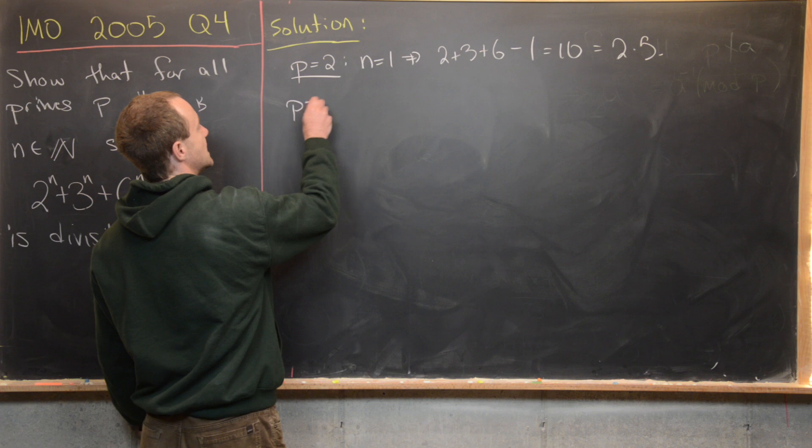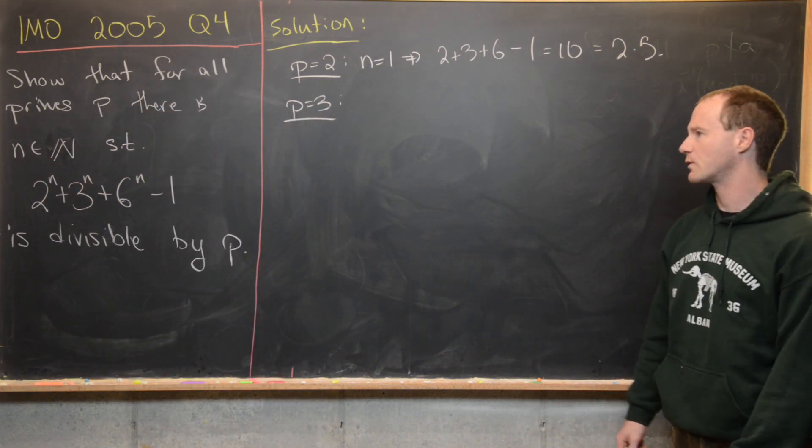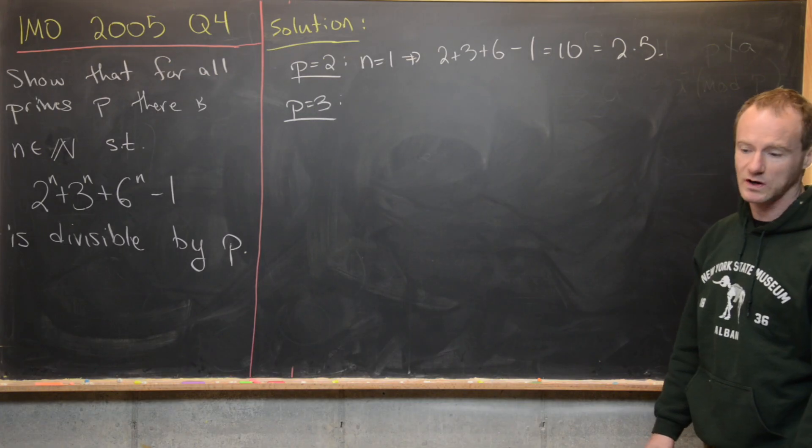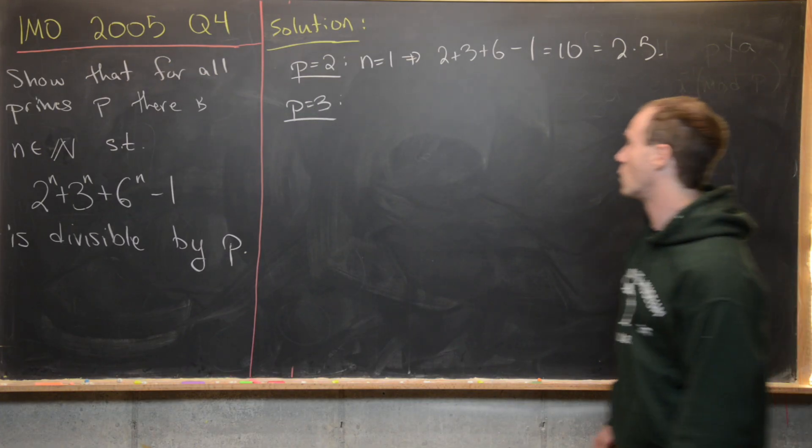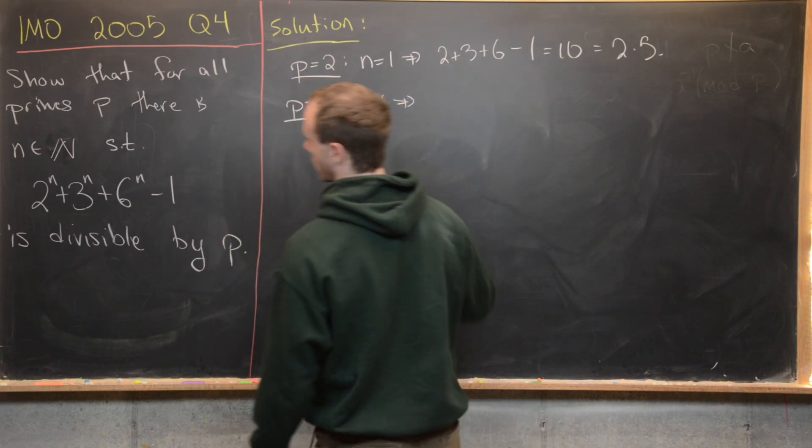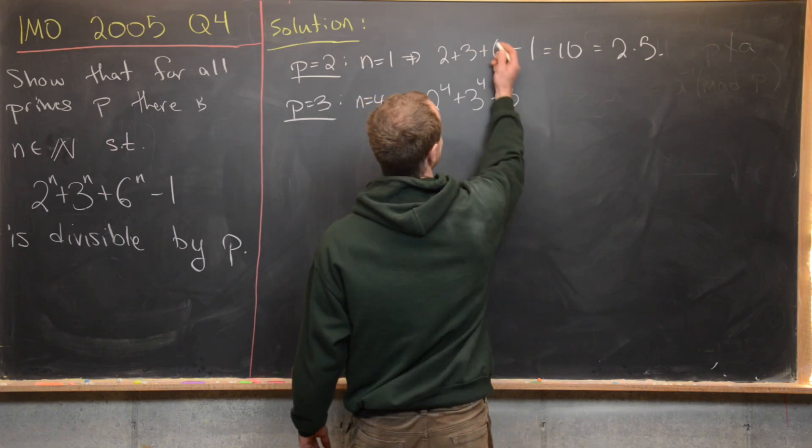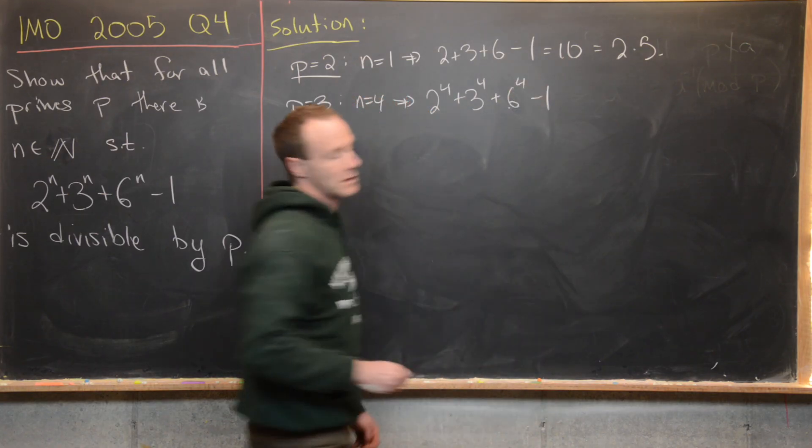Now let's look at p equals 3, and I think maybe you can play around with this a little bit, but what works here is n equals 4. So if we take n equal to 4, we have 2^4 + 3^4 + 6^4 - 1.